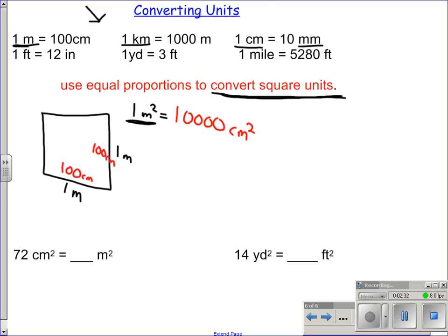You can do the same thing for anything. If you have one yard by one yard and you want to know how many square feet that is, one yard is three feet. So in one square yard, that is three feet times three feet, which is nine square feet.